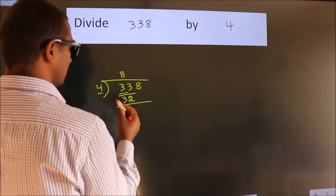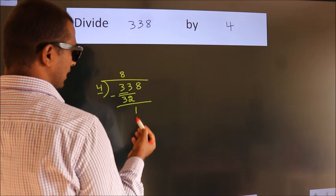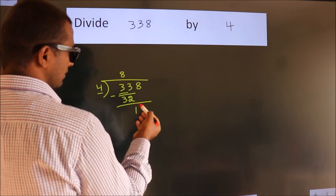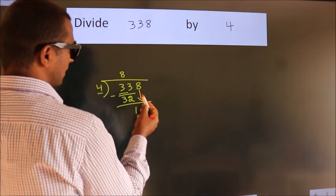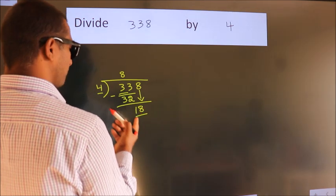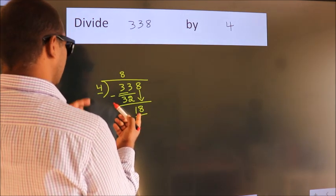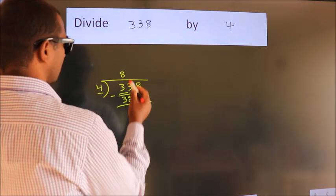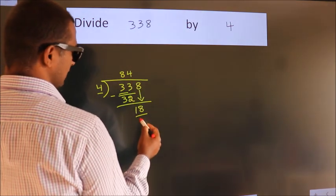Now, we should subtract. We get 1. After this, bring down the beside number. So, 8 down. So, 18. A number close to 18 in 4 table is 4×4=16.